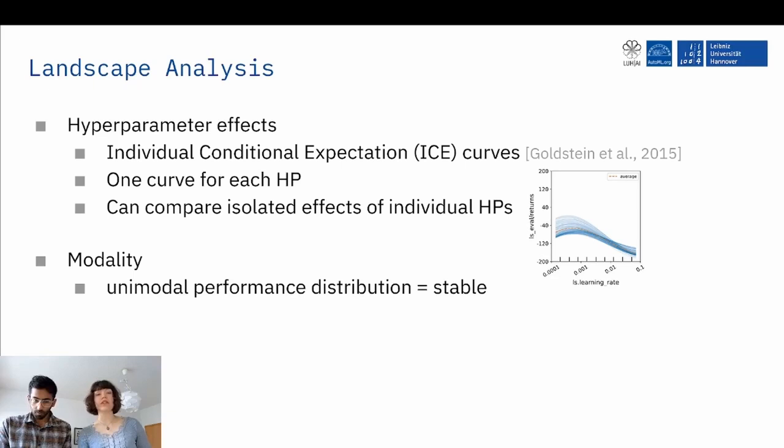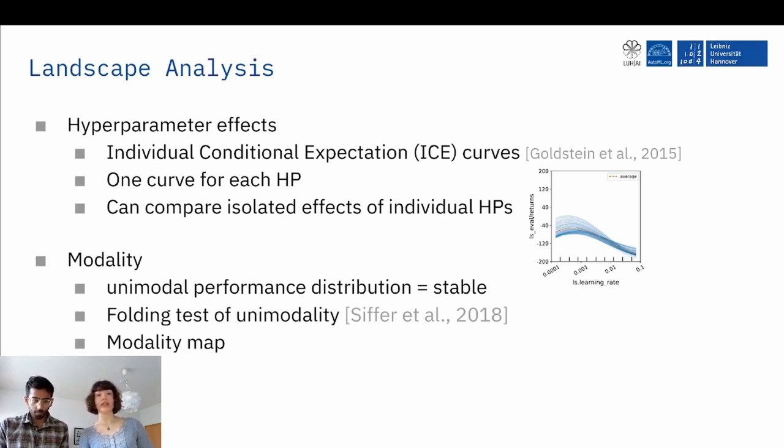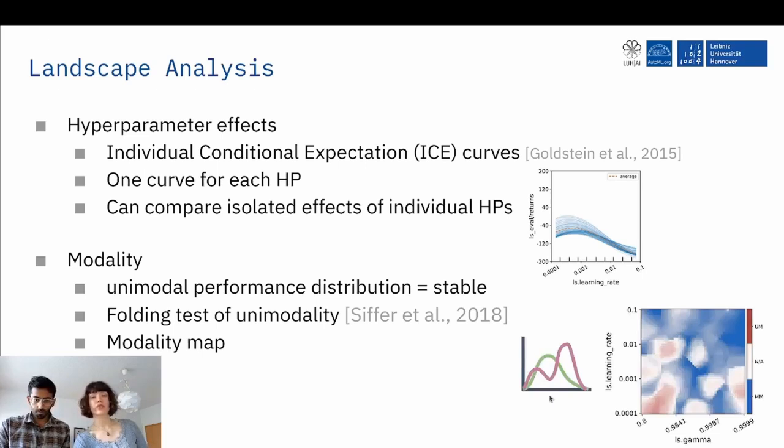The other thing is the case of modality. So if we have unimodal performance distributions, we can predict them better and we perceive them as more stable. But this is why we want to test for unimodality and we can do this with a folding test by Siffer et al. And we can create modality maps. The folding test works as follows. So imagine you have a two-mode distribution and then you can find the optimal point where you can fold this distribution. And now you can imagine that both peaks lie on top of each other and therefore reduce the variance of the whole thing drastically. And this is how we can test for multimodality. And we have resulting maps, blue areas multimodality, red areas unimodal, and we can see it's pretty scattered across the landscape.